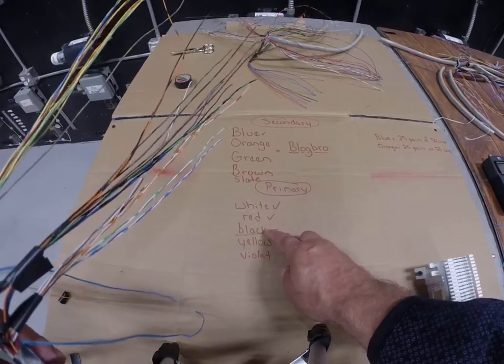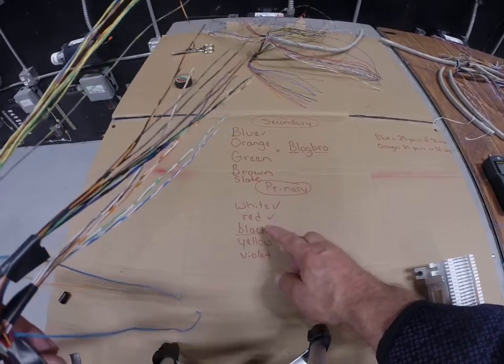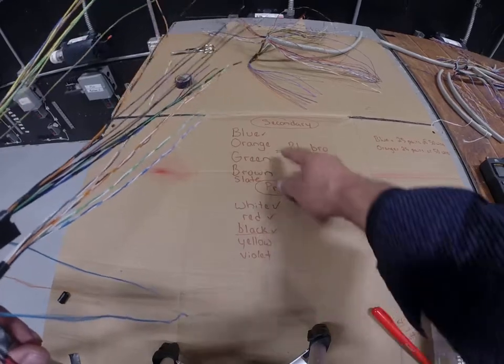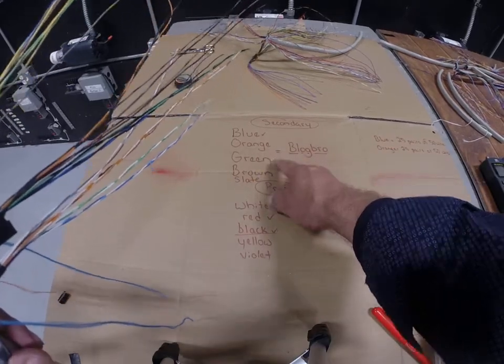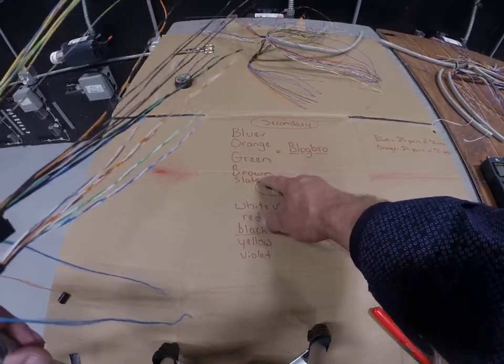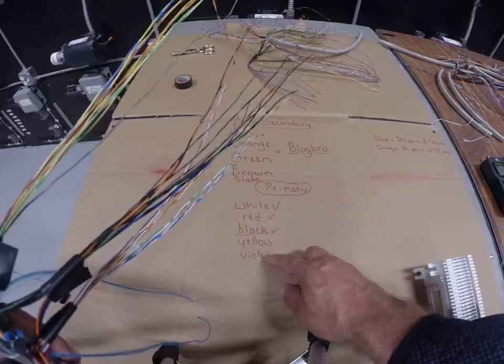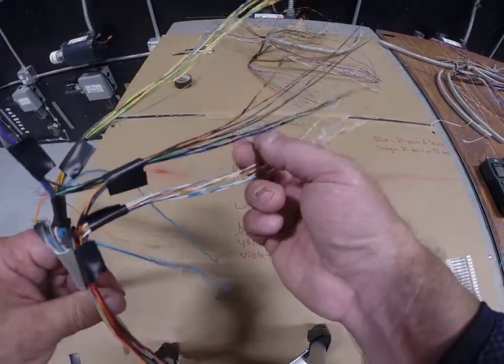And then I'll go to the black set. It's going to go black blue, black orange, black green, black brown, black slate, and then to yellow and violet in the same thing. So let's take a look at what I did here.